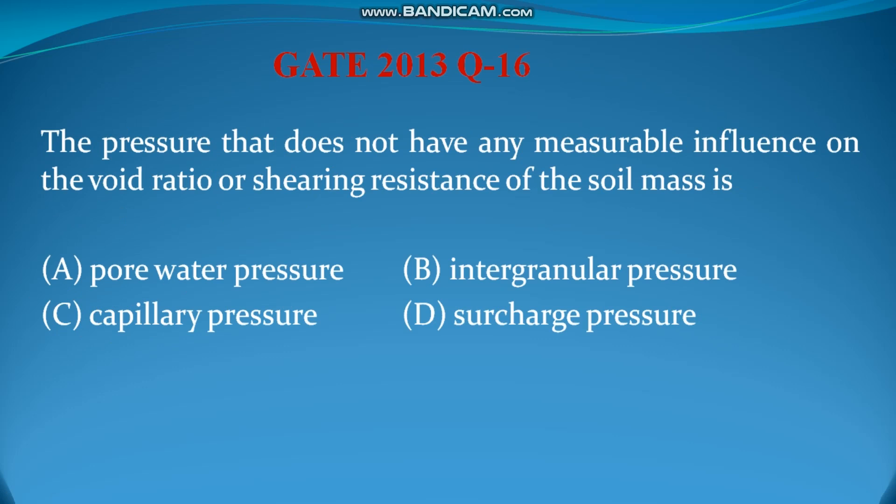Question number 16: which pressure does not have any measurable influence on void ratio or shearing resistance of the soil mass? Options are pore water pressure, intergranular pressure, capillary pressure, and surface pressure. Pore water pressure does not affect the void ratio; void ratio remains the same regardless of pore water presence. Others affect void ratio and shearing resistance. Therefore the answer is pore water pressure.